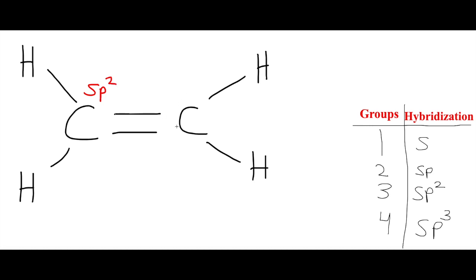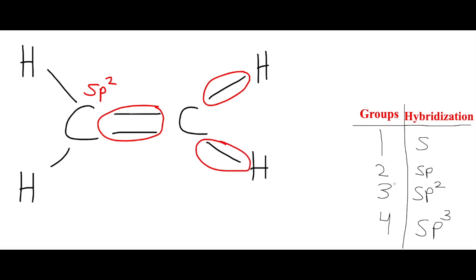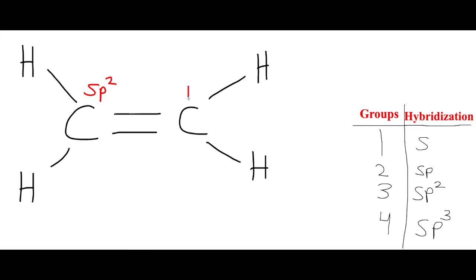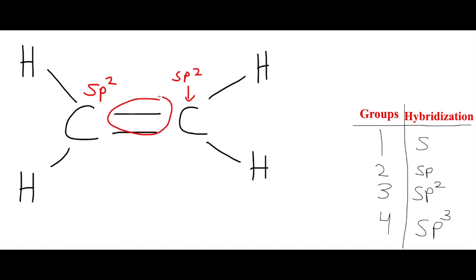Now if you look at the second carbon and determine its hybridization, we know it also has one, two, three — three groups, SP2 hybridization. So this carbon is also SP2. Groups meaning how many bonds it has — we don't count individually, but we count as a whole if it's connected as a whole.